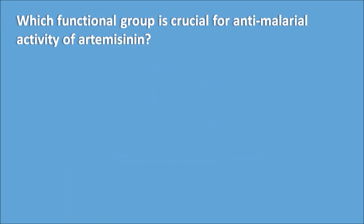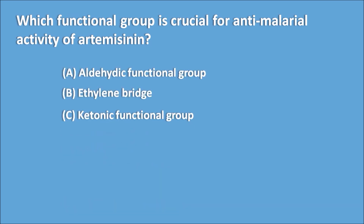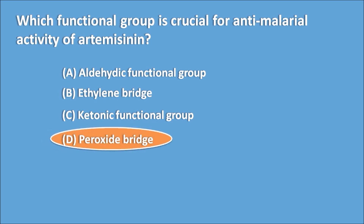Which functional group is crucial for anti-malarial activity of artemisinin? A: aldehyde functional group, B: ethylene bridge, C: ketonic functional group, D: peroxide bridge. You should know the structure of artemisinin and its functional groups. The answer is D, the peroxide bridge — specifically an endoperoxide — which is responsible for the anti-malarial activity of artemisinin.